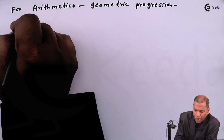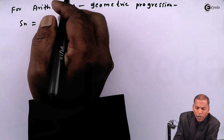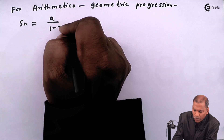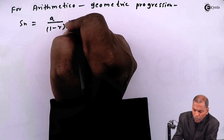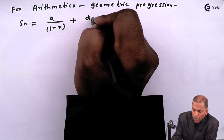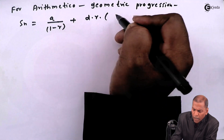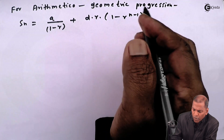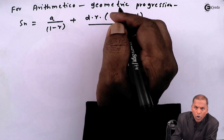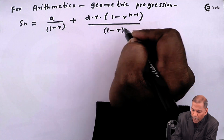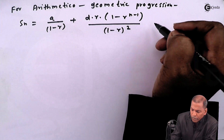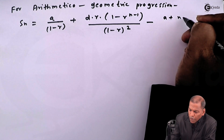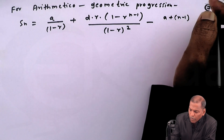For arithmetico-geometric progression, we can write S_n equal to a upon (1 minus r), plus d·r·(1 minus r^(n-1)) divided by (1 minus r)², minus [a plus (n minus 1)·d] multiplied by r^n upon (1 minus r).